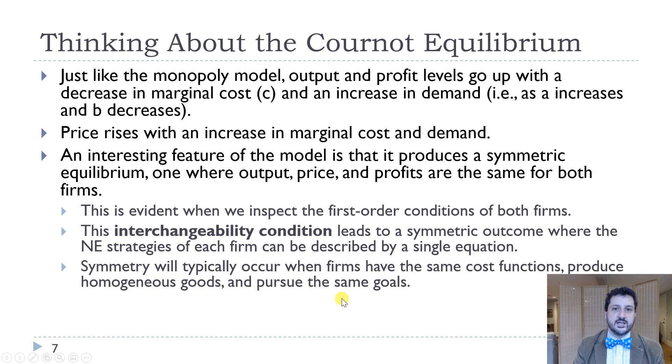So if we think about this model, we can say, all right, well, output and profit go up as marginal costs go down or as demand goes up. That's not too surprising. So when costs go down, profit goes up. And when demand goes up, either A goes up or B goes down, profit goes up.